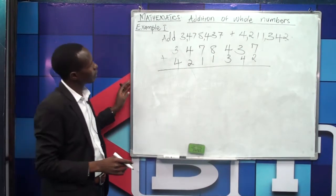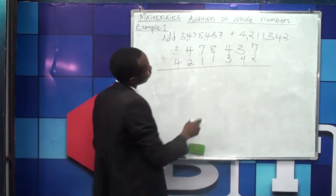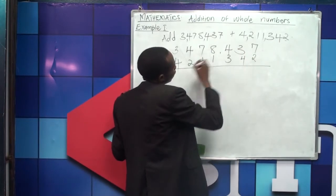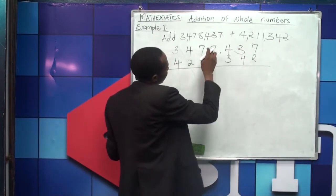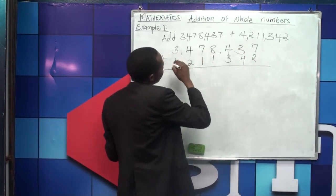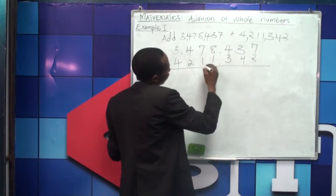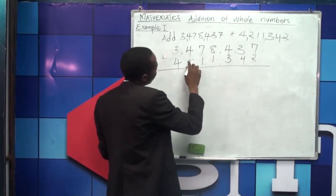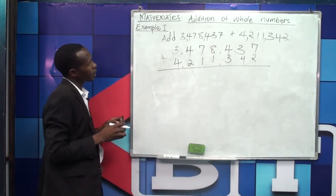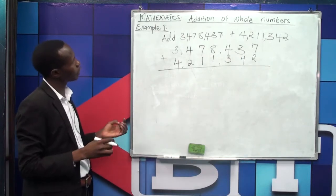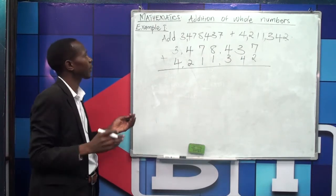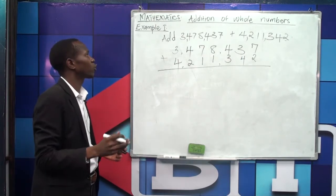When you look at this arrangement, we count three digits, put a comma, three digits, put a comma, and so on. That is how we arrange the two numbers and identify their place values.